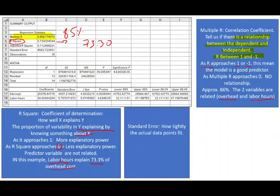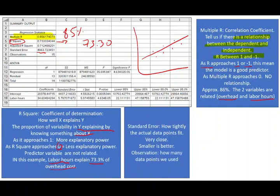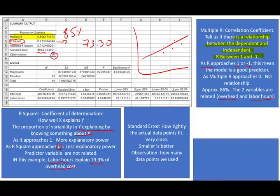The standard error is 4,963. It shows us how tightly the actual data points fit the line — basically, how close the numbers are to the line. The smaller the better, though it's not as important as Multiple R and R-squared. The observation count is 15, meaning we used 15 months' worth of data to run this analysis.